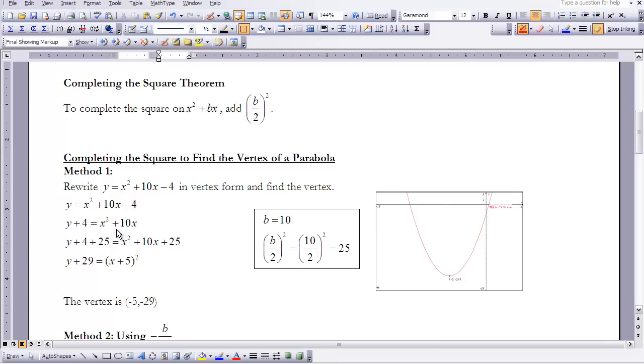That leaves me with x squared plus 10x on the right-hand side and y plus 4 on the left. That leaves an opening to add something to make the right-hand side a perfect square. I have a calculation using b over 2 squared. b is 10, 10 over 2 is 5, 5 squared gives me 25. So I'm going to add 25 to both sides. You can see here, I have it in red, and in the next line.